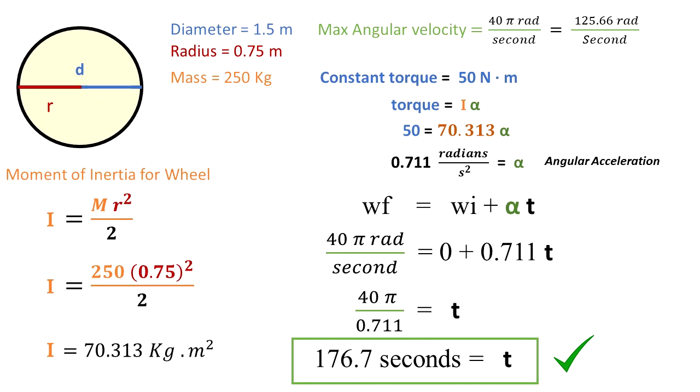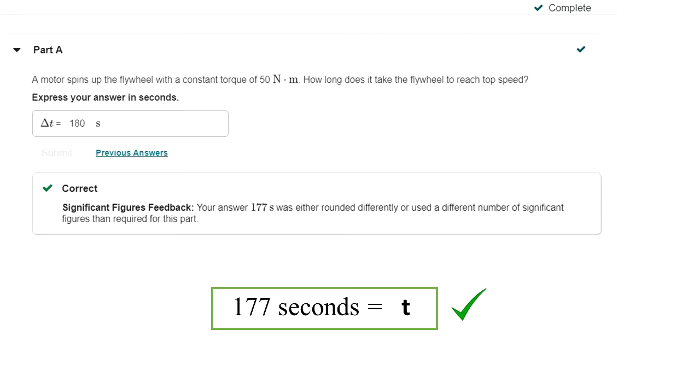We can round up to 177 seconds. This means that if a constant net torque of 50 Newton-meters is applied to that wheel, it will take about 177 seconds to achieve the maximum angular velocity of 1200 revolutions per minute.